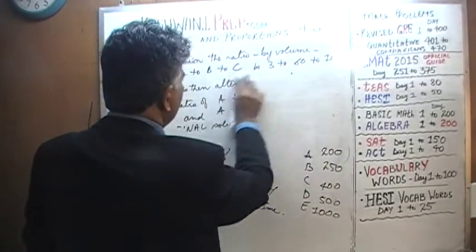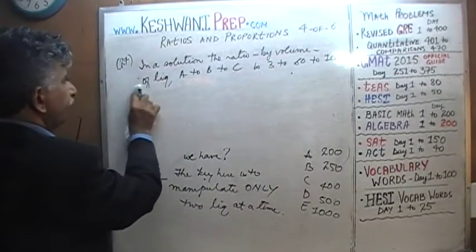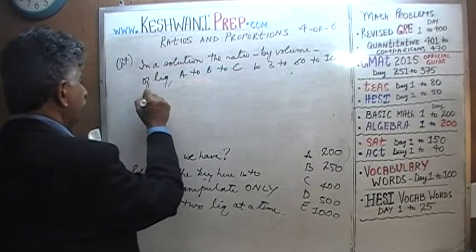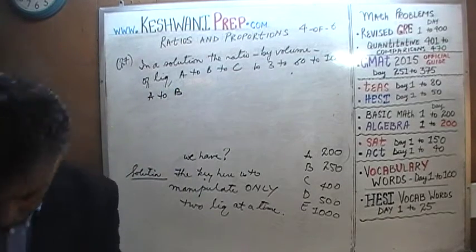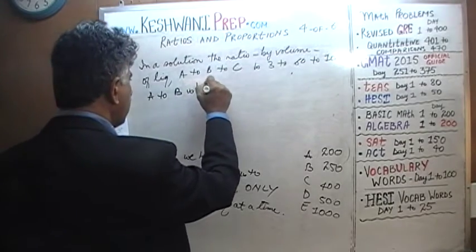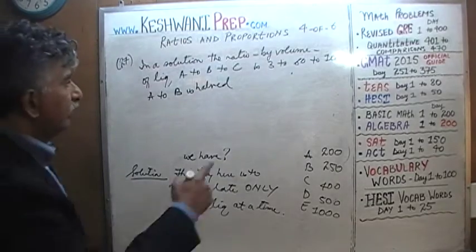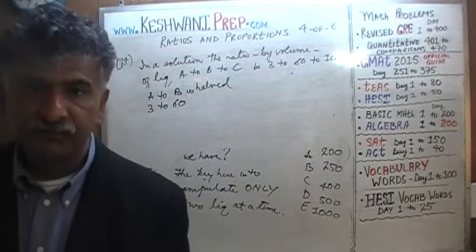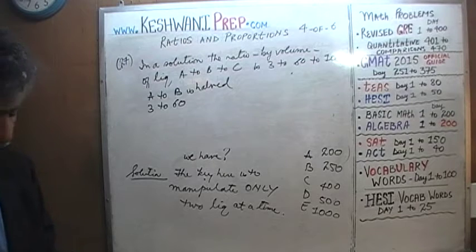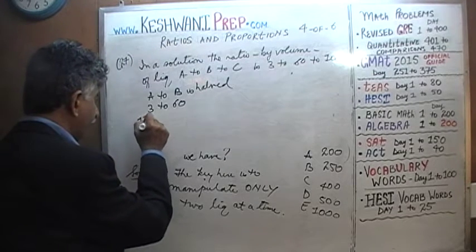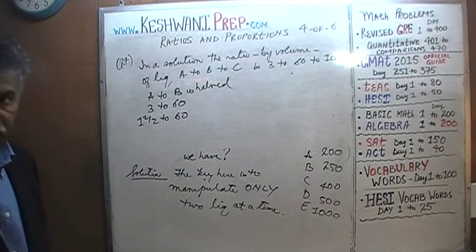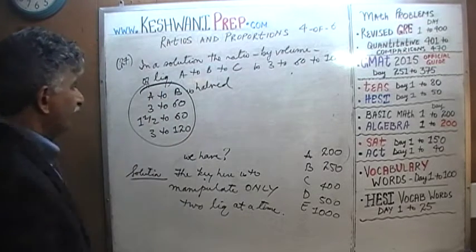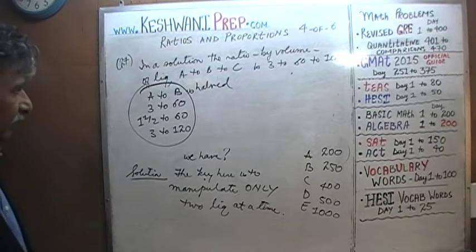First, A to B: we're told the ratio of A to B is halved. Originally A to B was 3 to 60. If we halve the ratio, rather than dealing with 1.5 to 60, I prefer to keep A as 3 and double B to 120. So A to B becomes 3 to 120. That part is done.